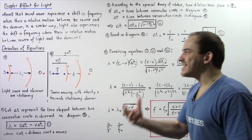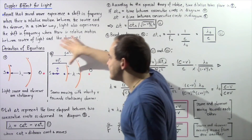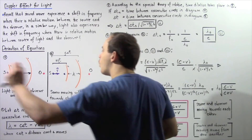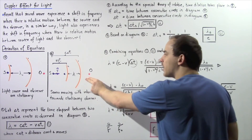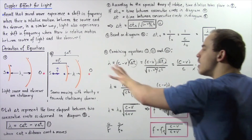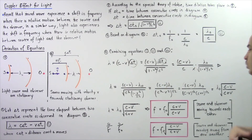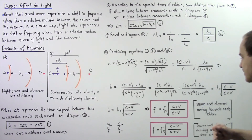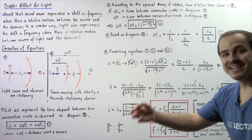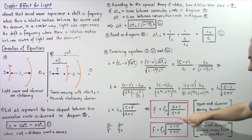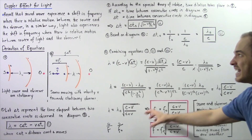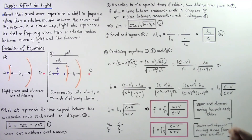We can also derive the second equation for the case where the source is moving away from the stationary observer. Following the same steps for that diagram, we simply replace V with negative V, so the top becomes C minus V and the bottom becomes C plus V. This gives us the second equation for the Doppler effect for light when the source and observer are moving away from one another.